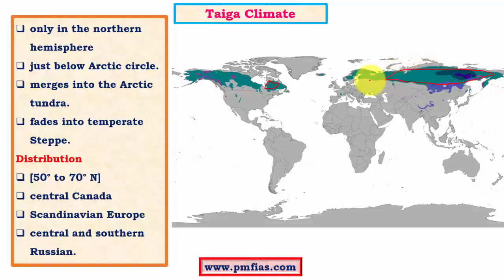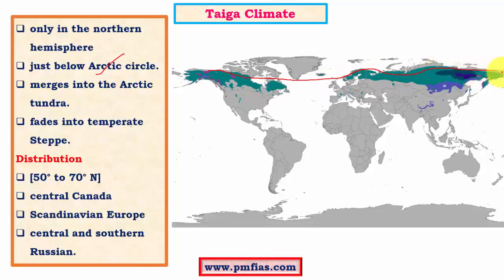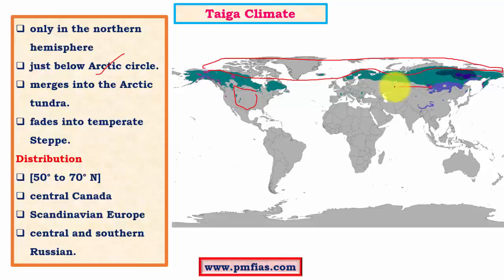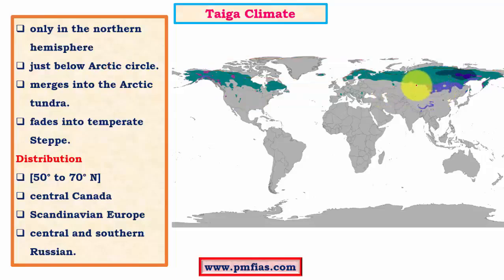The Scandinavian or Fenno-Scandinavian countries — Norway, Sweden, and Finland — also have Taiga type climatic conditions. This climate occurs just below the Arctic Circle and merges into the Arctic Tundra to the north. To the south it fades into the steppe type of climate, where we find prairies and Asiatic steppes.